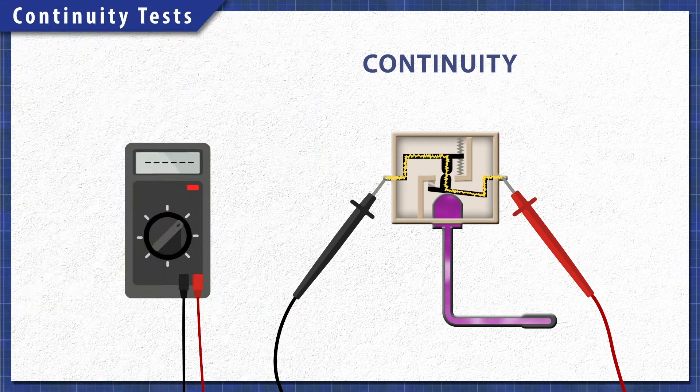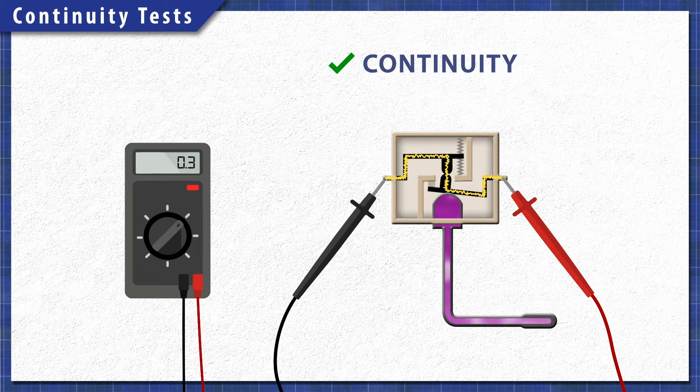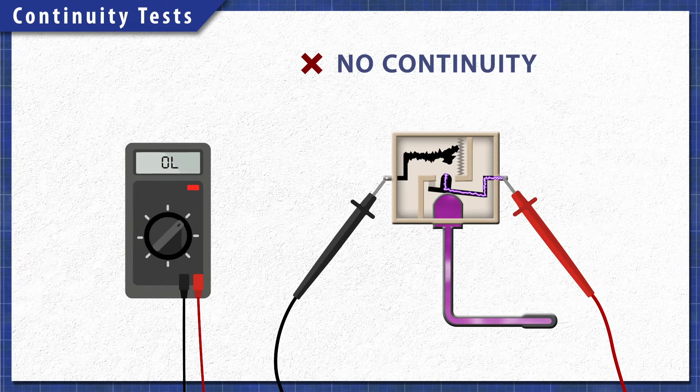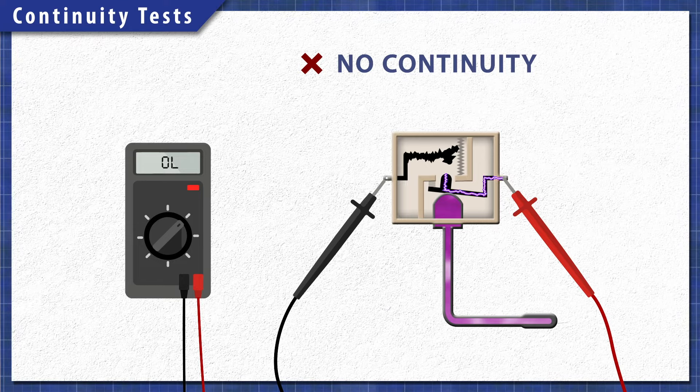Using a multimeter, components can be tested for continuity. A continuity test will determine if there is a continuous path for electricity to flow through. Without continuity, the component will not work and will need to be replaced.